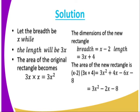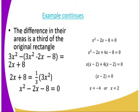The dimensions of the new rectangle: the breadth has been decreased by 2, and the length has been increased by 4. So the new area is (x − 2)(3x + 4). Expanding, we get 3x² + 4x − 6x − 8, which is 3x² − 2x − 8. The difference between the two areas — that is, the original area minus the new area — gives us 2x + 8.